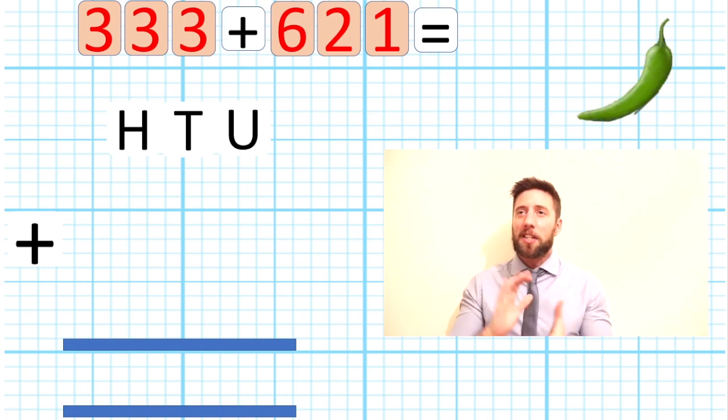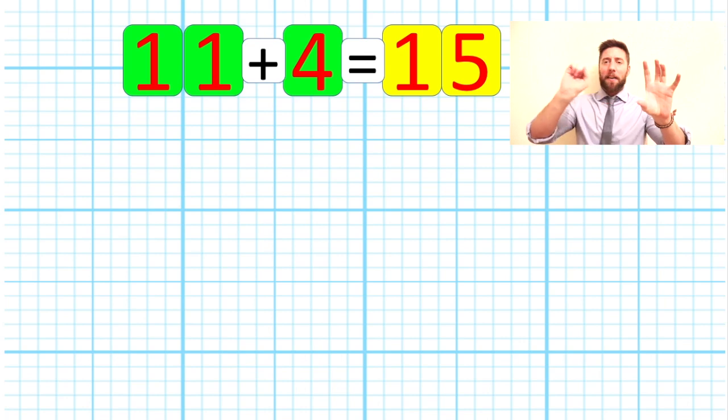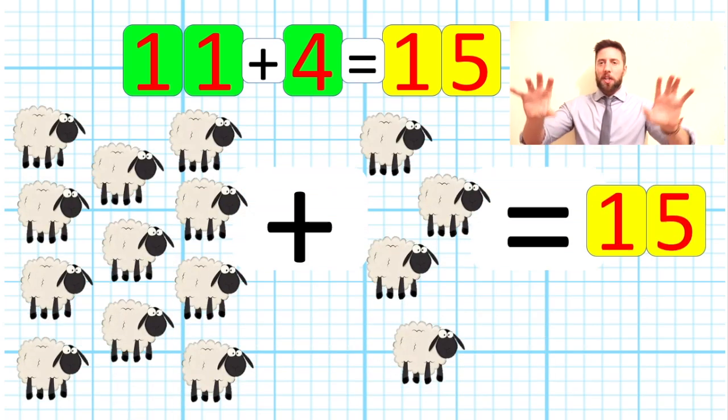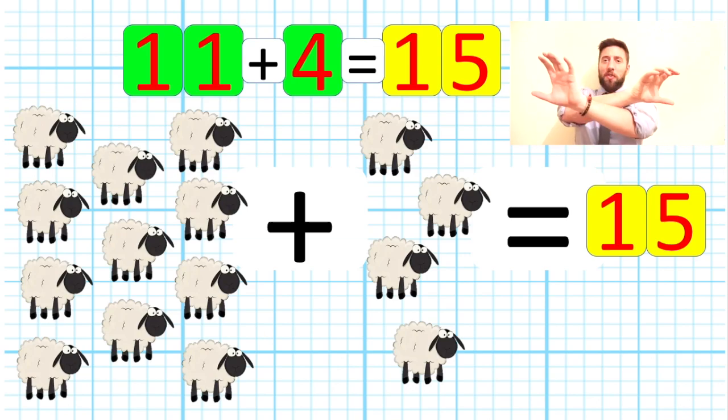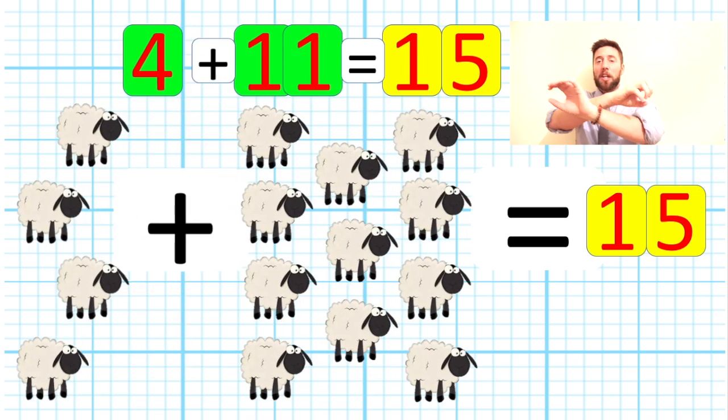If I have 11 add 4, we get 15. I can represent it here with these images. If I switch these around and add 4 add 11, I still get 15, and that is because addition is commutative. It doesn't matter which way around we put our question, we're gonna get the same answer.